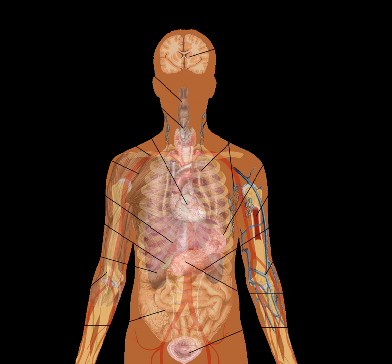Endocrine system: communication within the body using hormones made by endocrine glands such as the hypothalamus, pituitary gland, pineal body or pineal gland, thyroid, parathyroids and adrenals, i.e., adrenal glands.